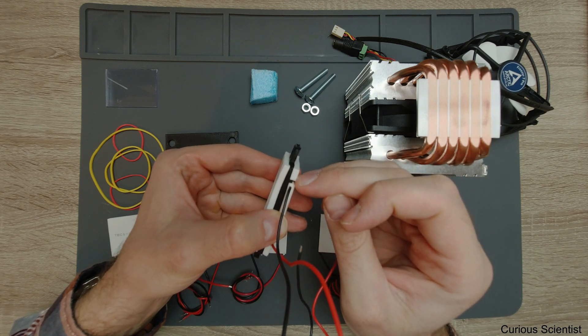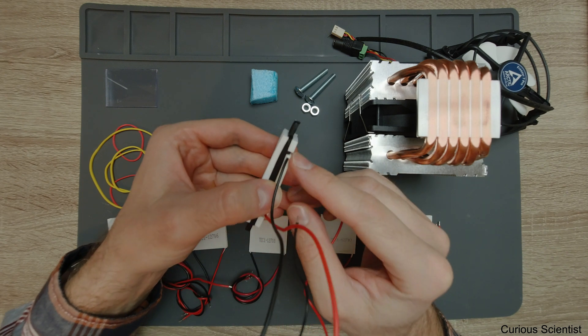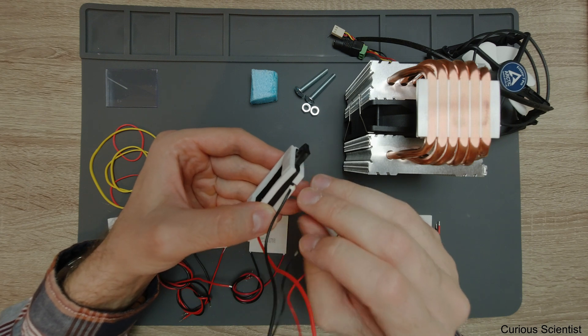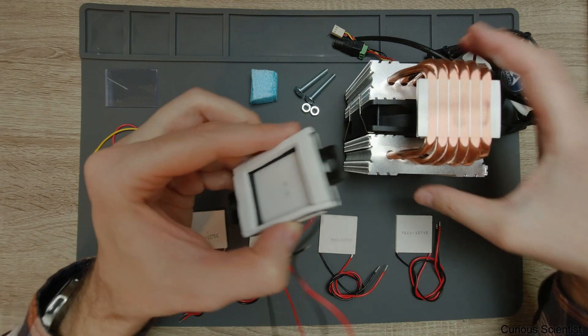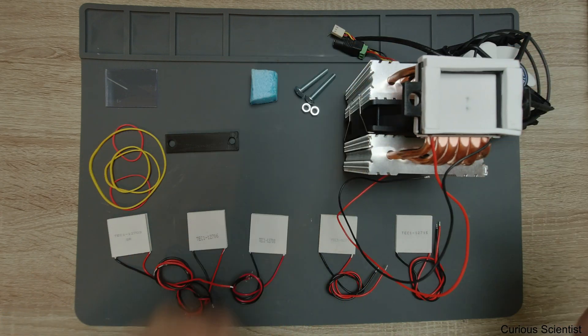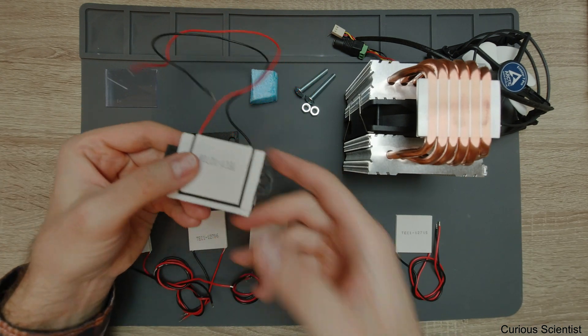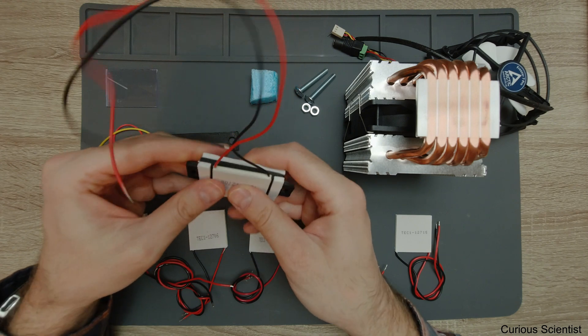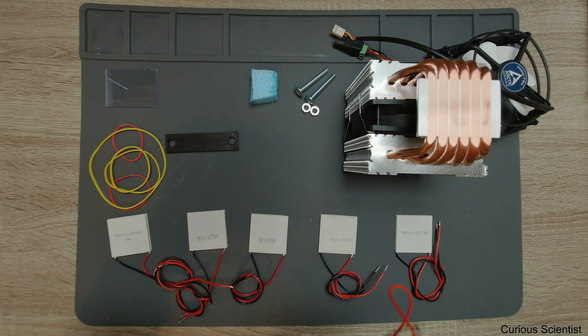When I attach the thermoelectric cooler to this thing, I only grip it by the cold side. When I clamp this thing on top of the cooler, I don't touch the hot side with this clamping mechanism at all, which is very good because I decrease the heat transfer.